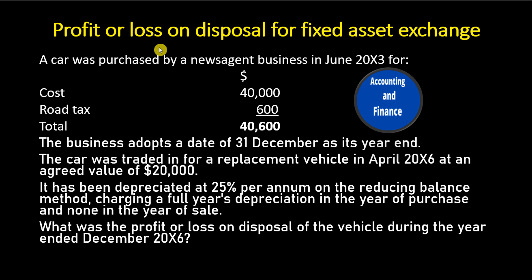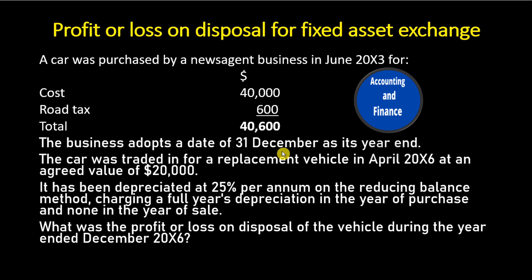Profit or Loss on Disposal for Fixed Asset Exchange. A car was purchased by a newsagent business in June 20X3 for a cost of $40,000, plus road tax of $600, totalling $40,600. The car was traded in for a replacement vehicle in April 20X6 at an agreed value of $20,000.